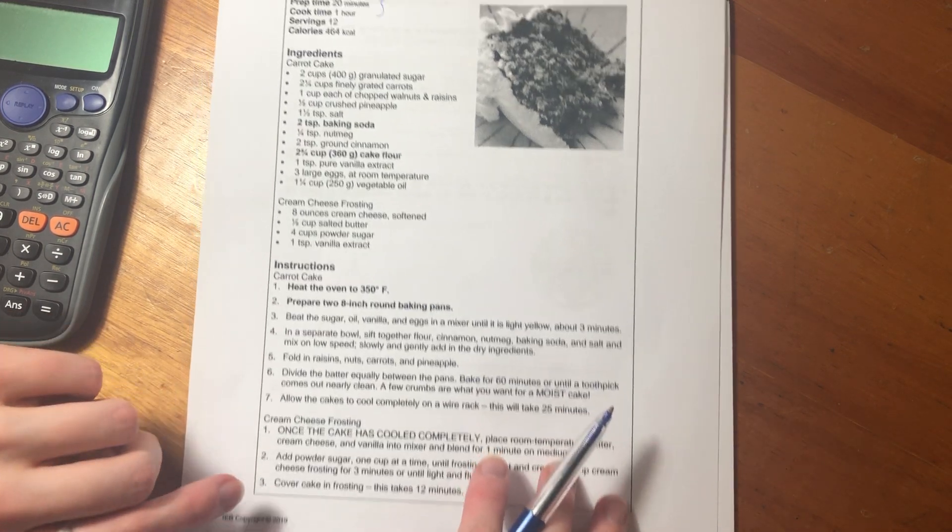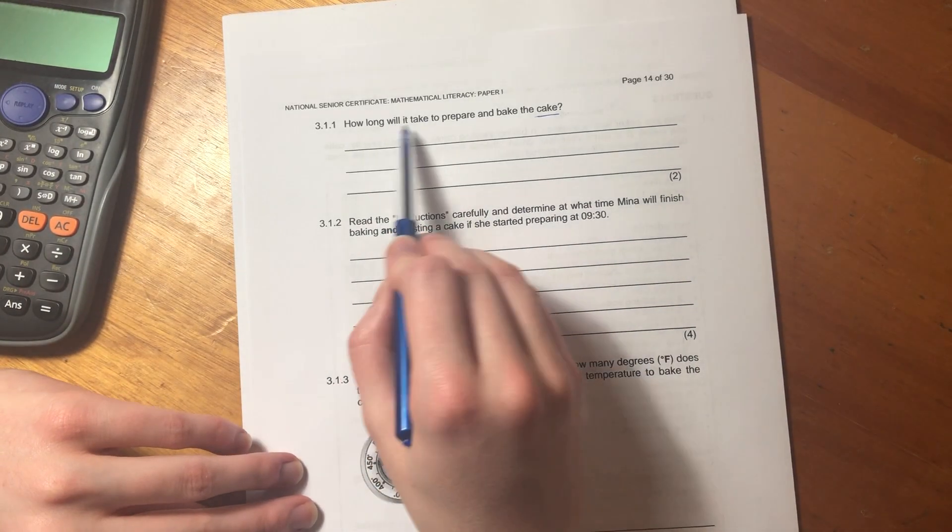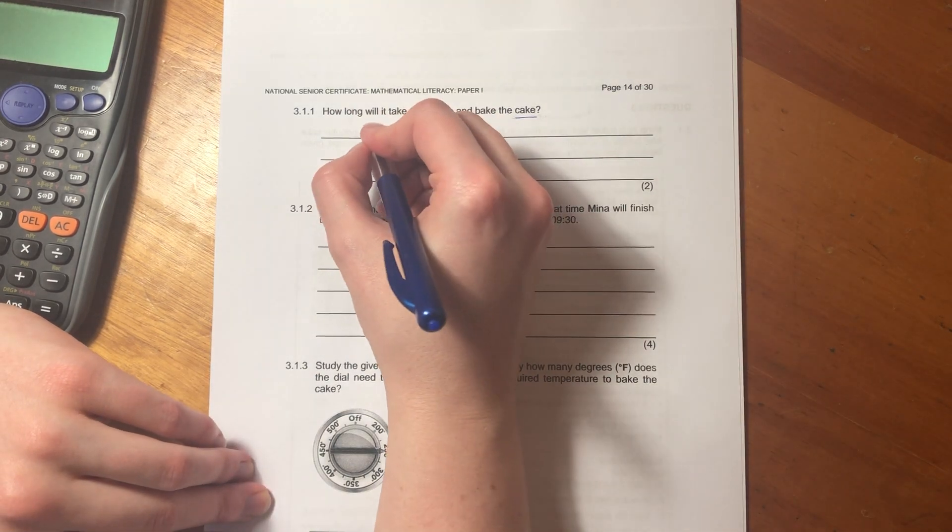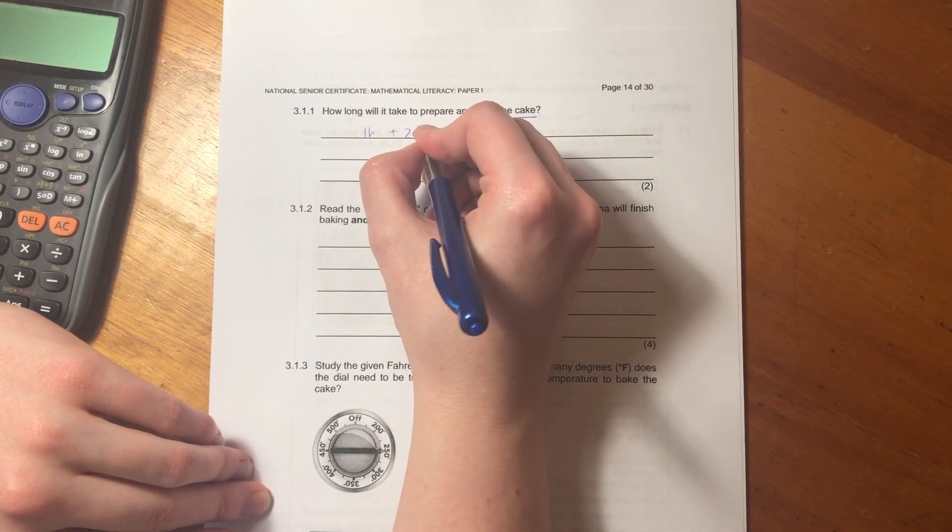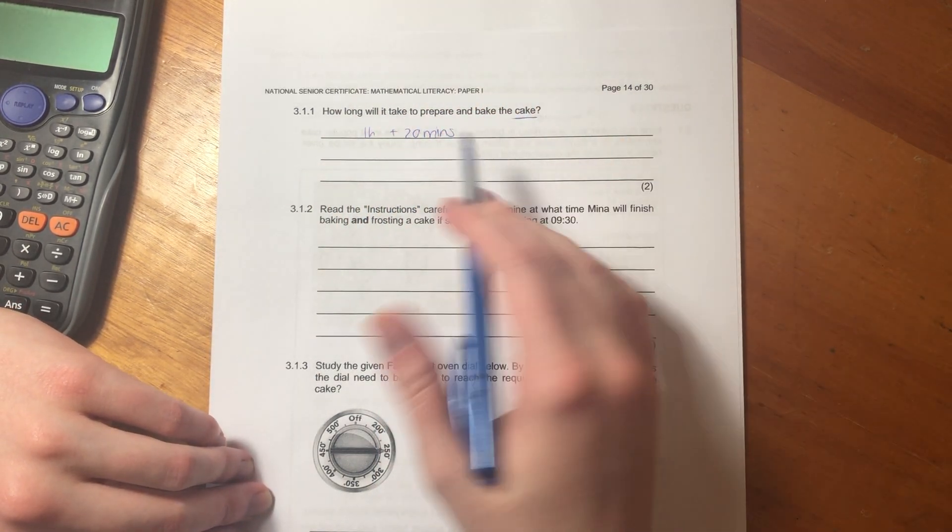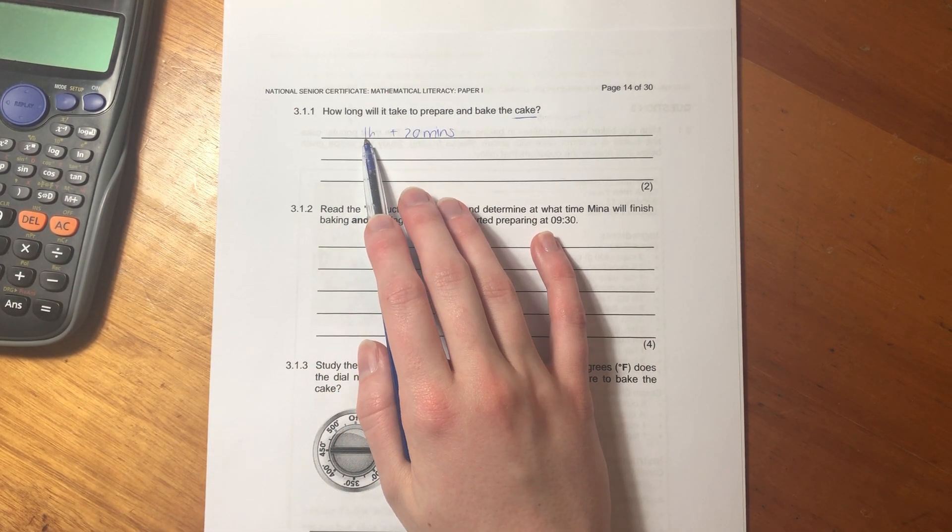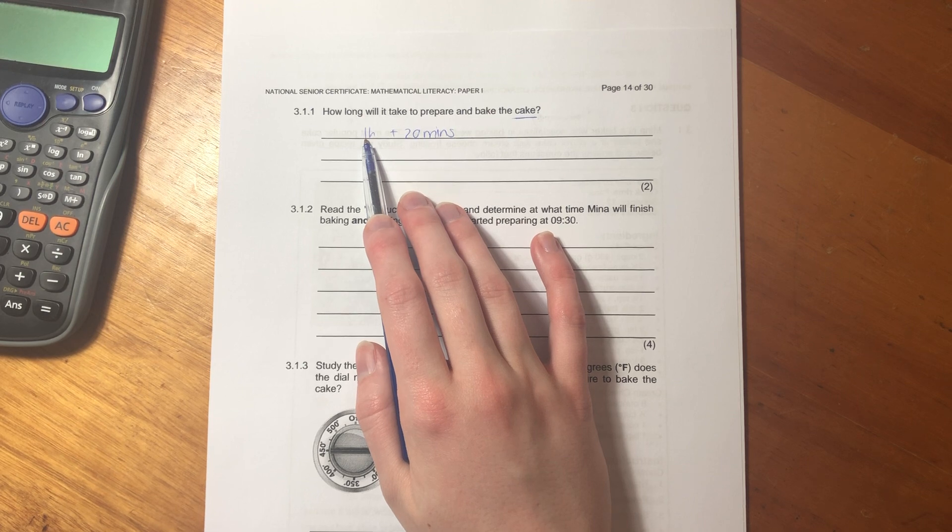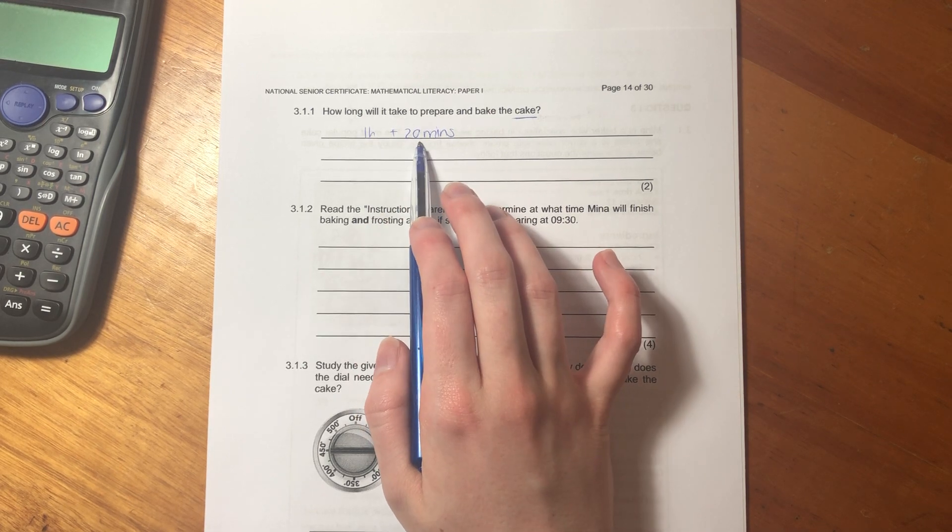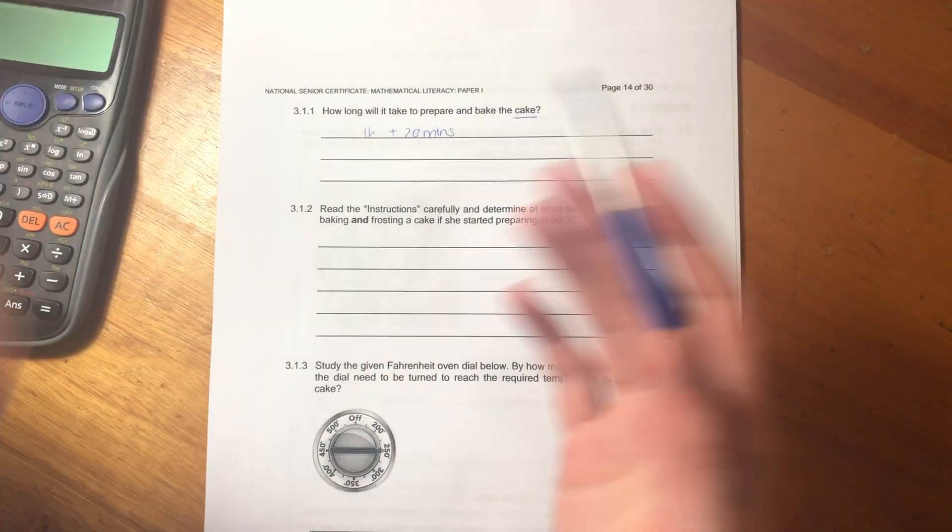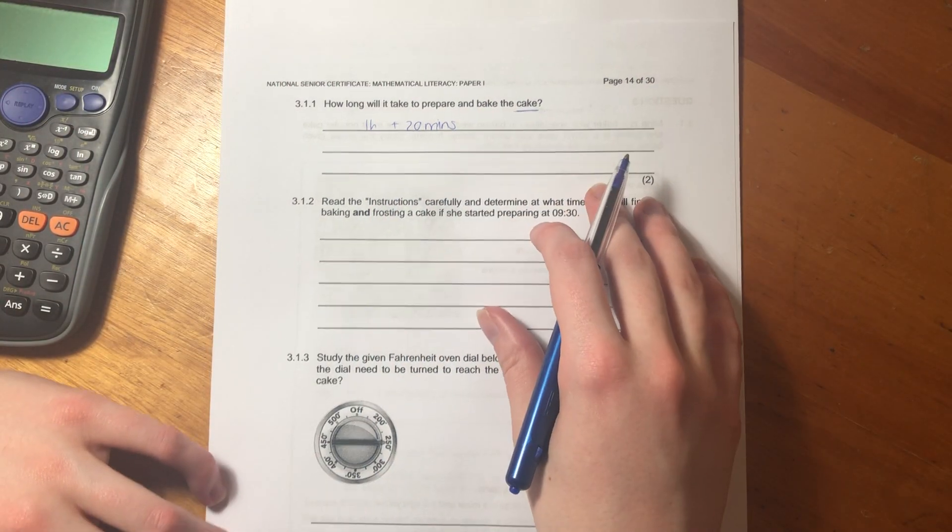Just make sure you read the question correctly. How long will it take to prepare and bake the cake? We said it's one hour plus 20 minutes. You can leave it like that or you can write it out in minutes, 60 minutes plus 20 minutes which is 80 minutes. But that's not necessary. You can say one hour and 20 minutes.